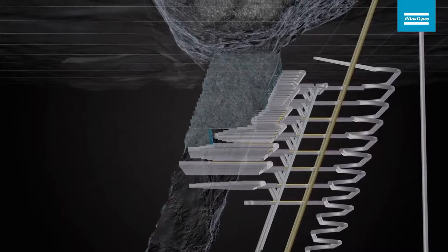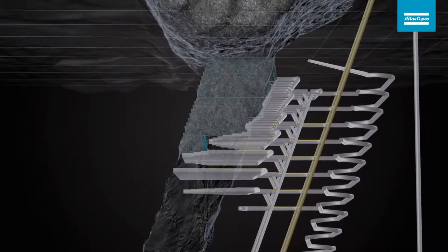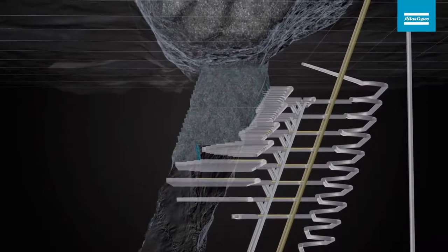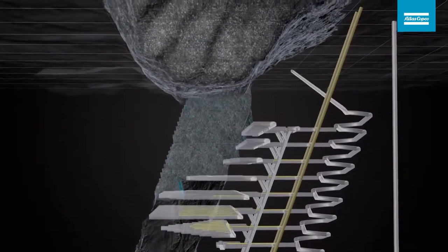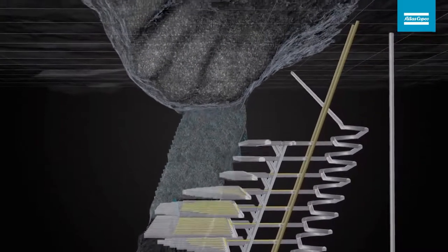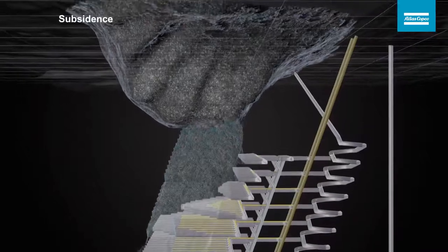Due to caving of waste rock into the blasted ore, a certain degree of ore loss and waste rock dilution comes with the method. Caving will sooner or later also cause subsidence on the surface.